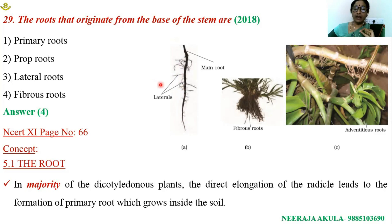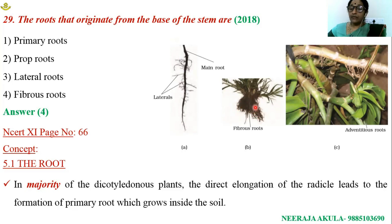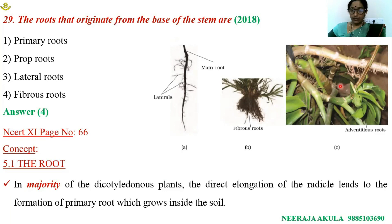In monocotyledons, the primary root is short-lived. As a result, a tuft of roots is formed from the base of the stem, known as fibrous roots — first a small primary root forms from the radicle, then it is replaced by a tuft of fibrous roots. Roots formed other than from the radicle are known as adventitious roots; they may form from the stem, nodes, internodes, or leaves.